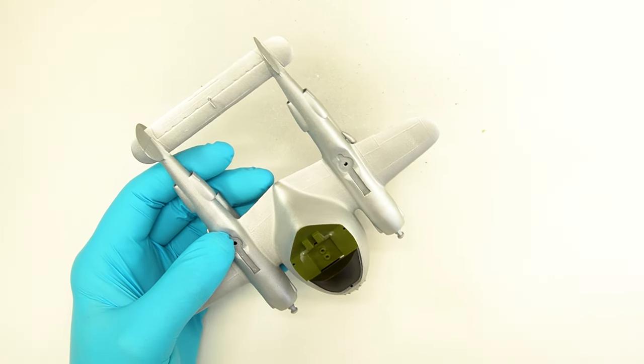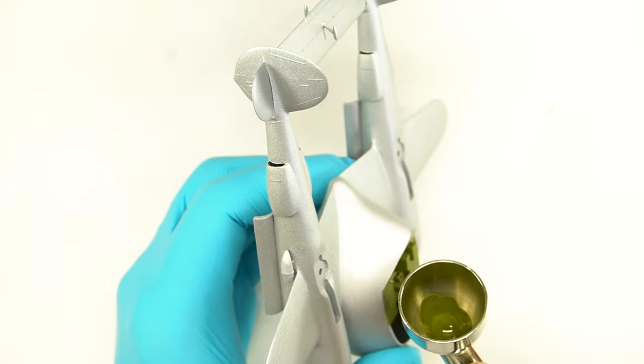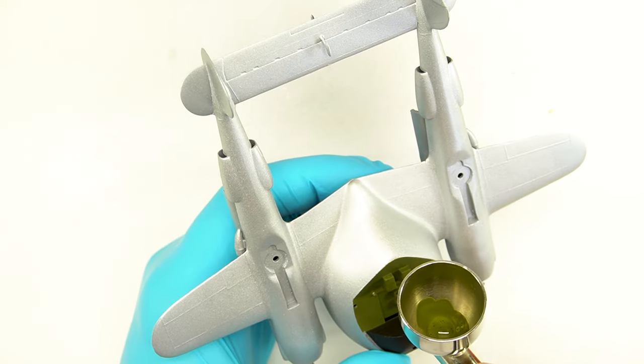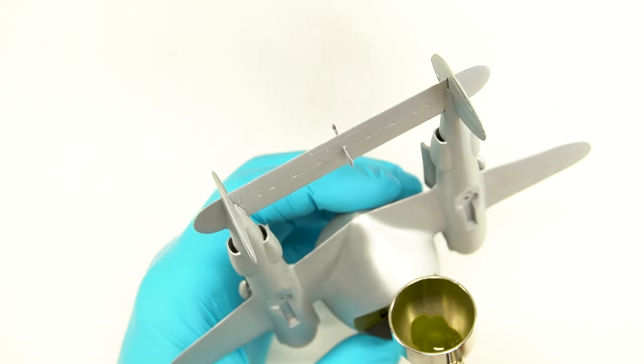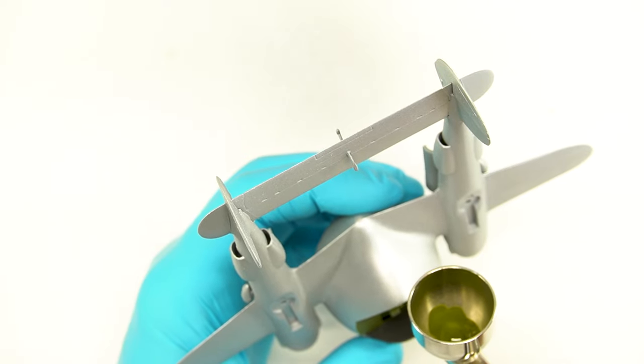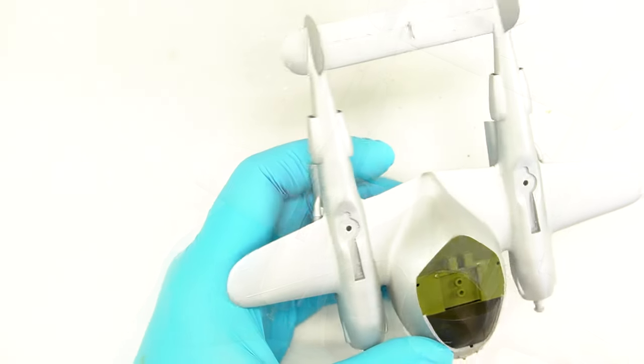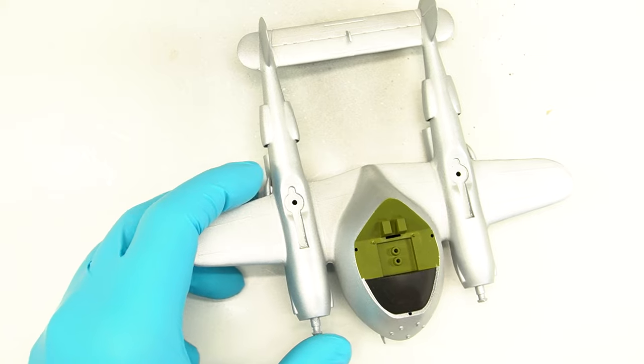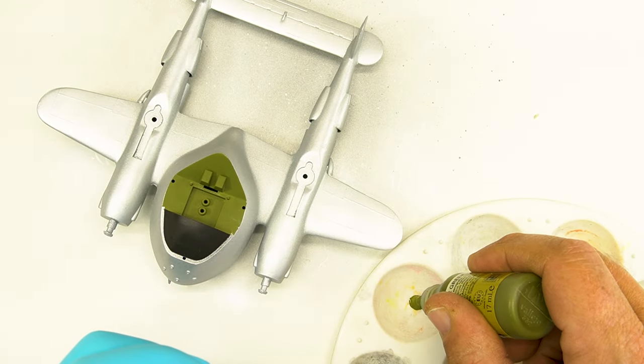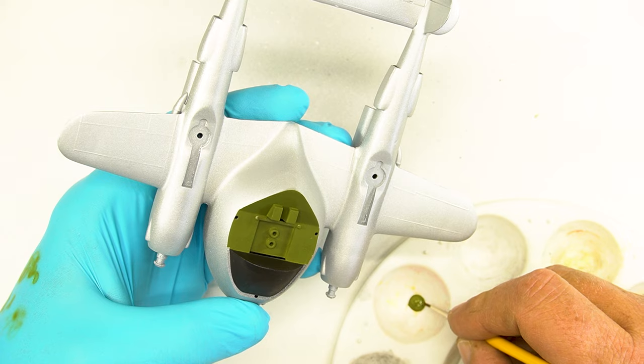Unfortunately some of the flat aluminum got through but we'll just touch that up. Low pressure, a fine needle and really close to the subject and I'm taking care of that green without having to worry about any masking. And where I couldn't get in with the airbrush we're just going to do a little hand touch up around the edges of the cockpit.